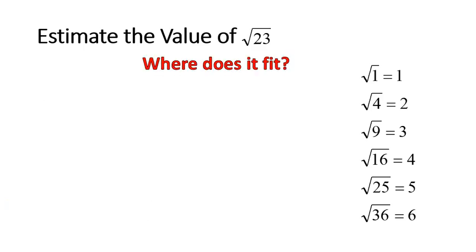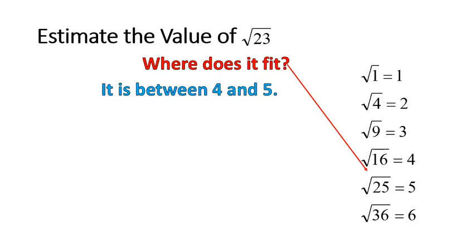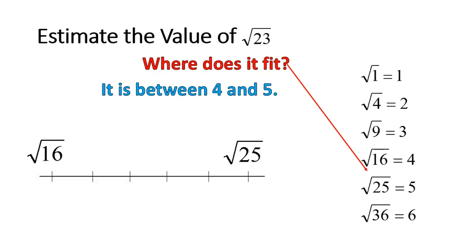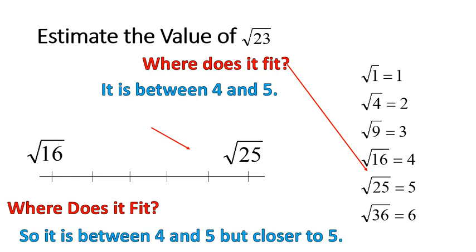Let's do another example. The square root of 23 — where does that one fit? It fits between the numbers 4 and 5, because the square root of 23 goes between the square root of 16 and the square root of 25. Making a number line and imagining where the square root of 23 lands, it's probably right about there — between 4 and 5, and a little bit closer to the number 5. That's how we estimate irrational square roots without using a calculator.